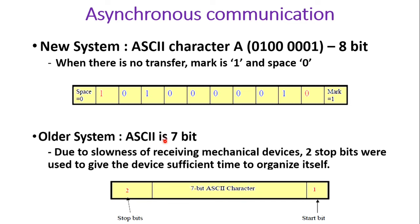In older systems, ASCII was a 7-bit character. The start bit was transmitted, followed by the seven-bit ASCII character, and then two stop bits were used. The reason for two stop bits was that the receiving device was too slow at that time, so two stop bits gave it ample time to process the content. In newer systems, only one stop bit is needed.